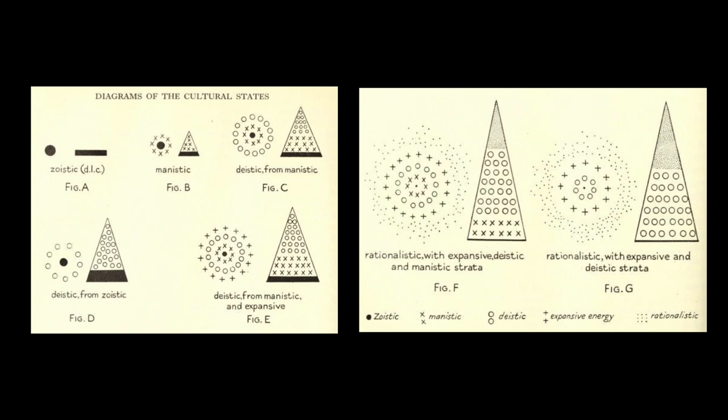Not only is its inherited tradition augmented by the products of its abundant energy, but it is also refined by human entropy. Consequently, a rationalistic stratum separates itself from the main body and forms another belt outside the deistic one. Figures F and G.